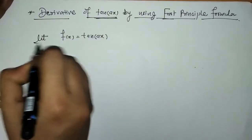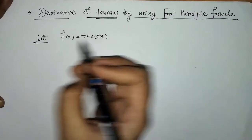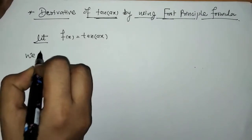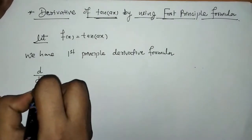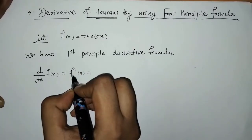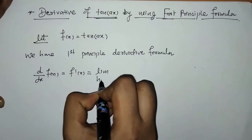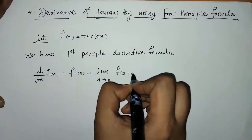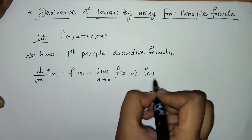We have taken f of x is equals to tan of ax. We know that the first principle derivative formula is: f dash of x is equals to limit h tends to 0, f of x plus h minus f of x, upon h.